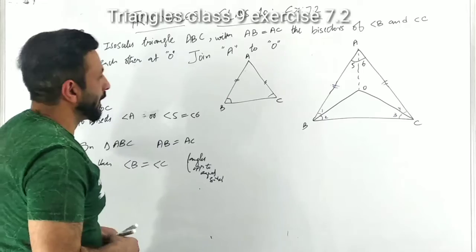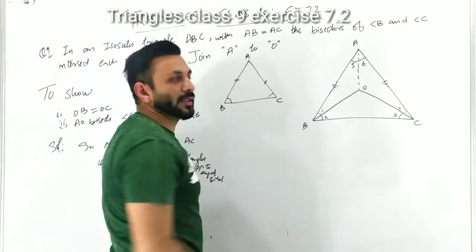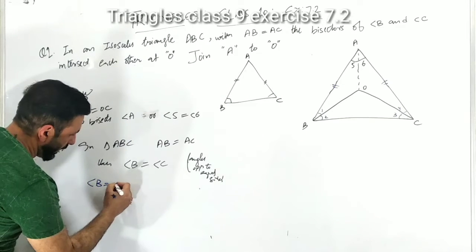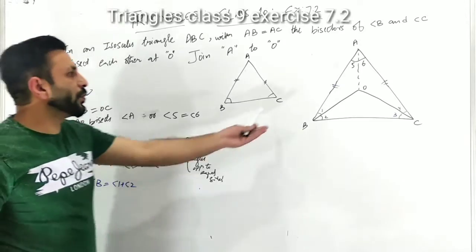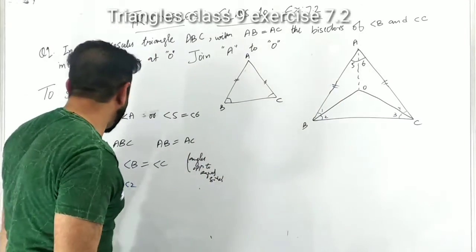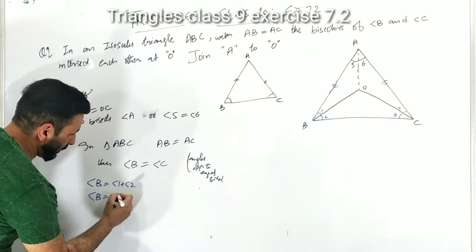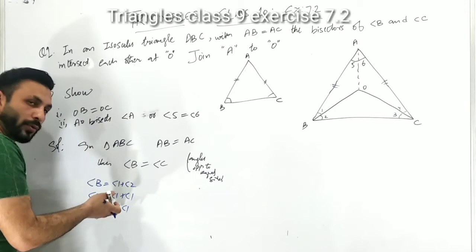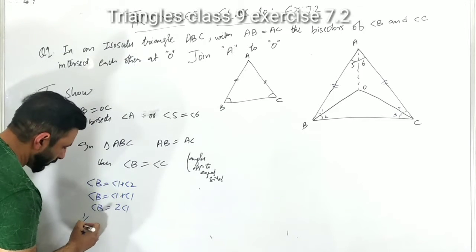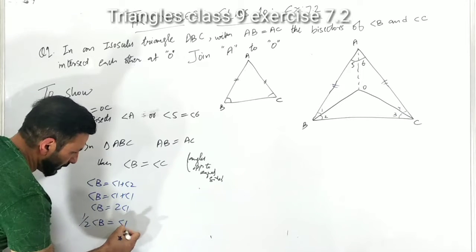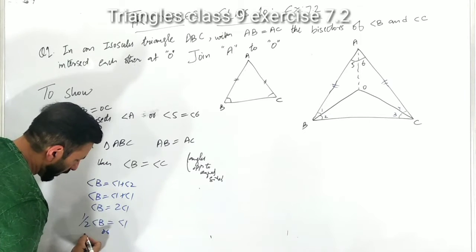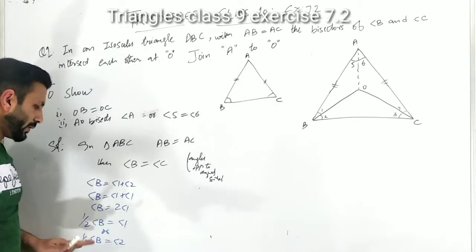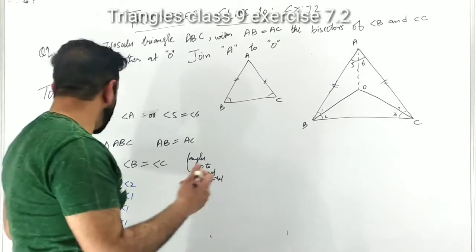Moving ahead — angle B is made up of angle 1 plus angle 2. But both are equal because OB is the bisector. So angle B equals angle 1 plus angle 1, meaning angle B equals twice angle 1. Transposing, half of angle B equals angle 1, and half of angle B equals angle 2, because angle 1 and angle 2 are both equal.